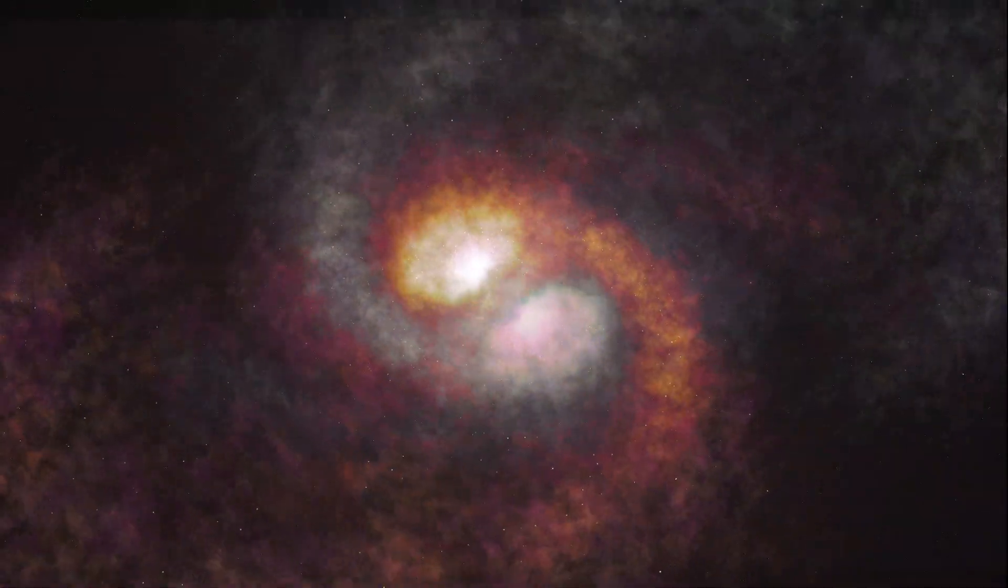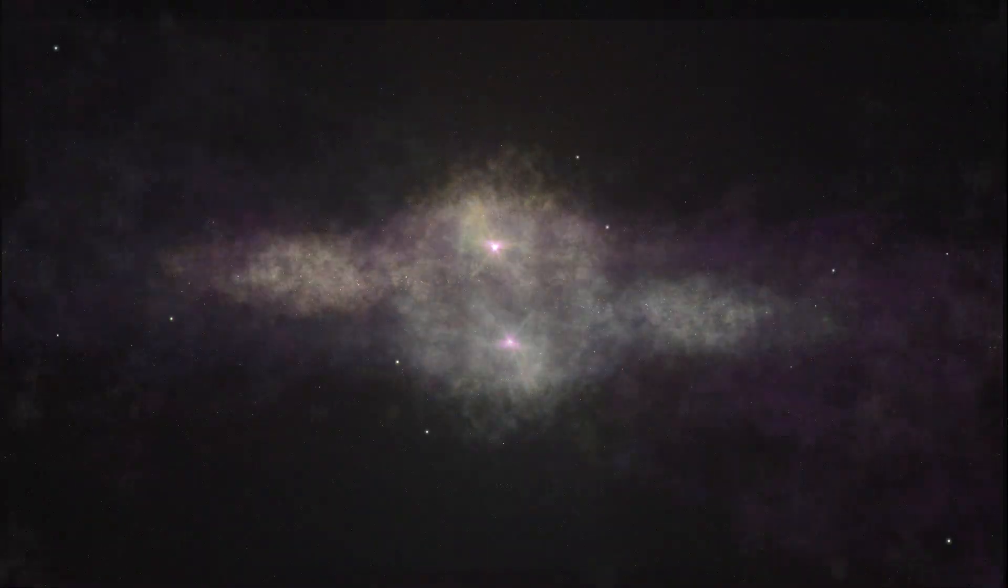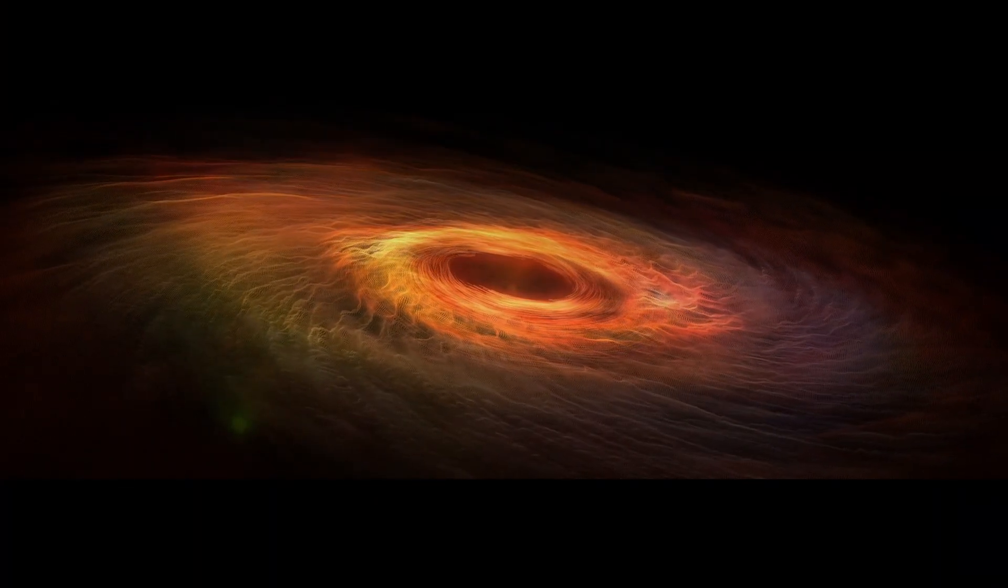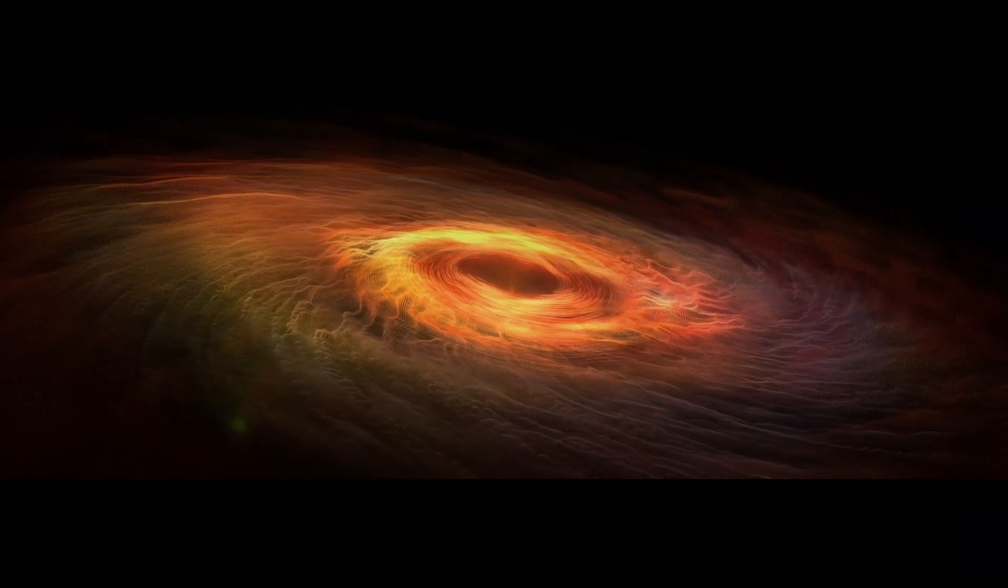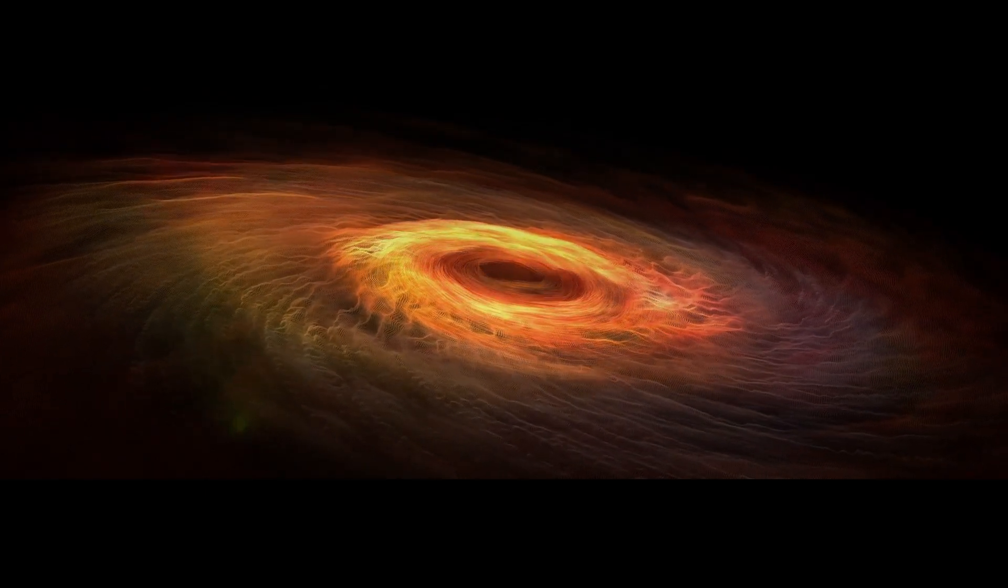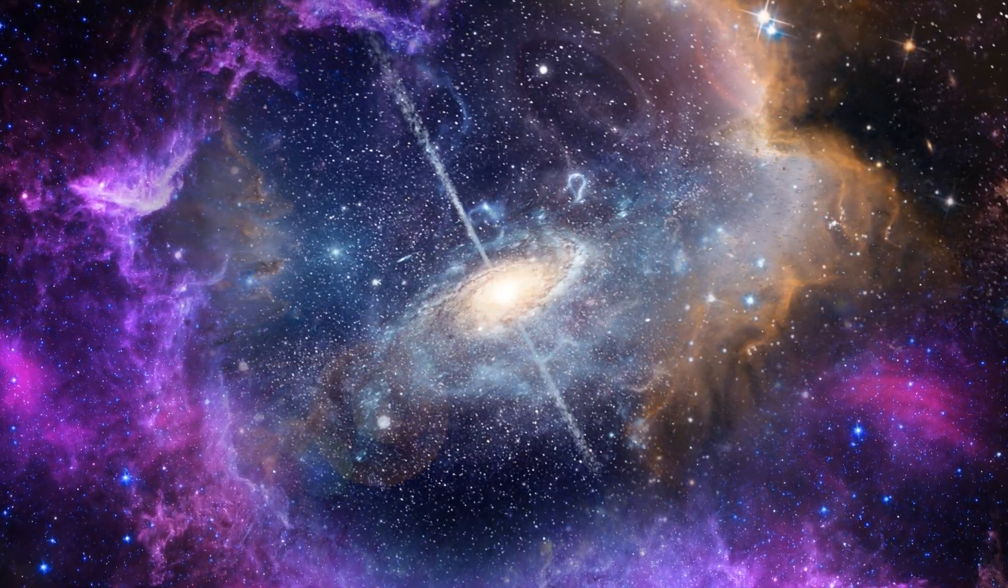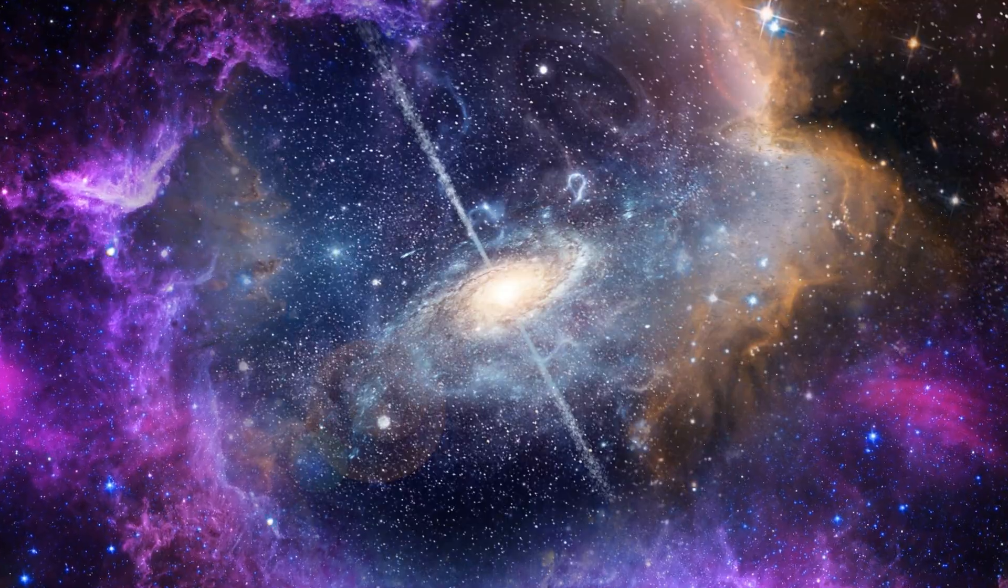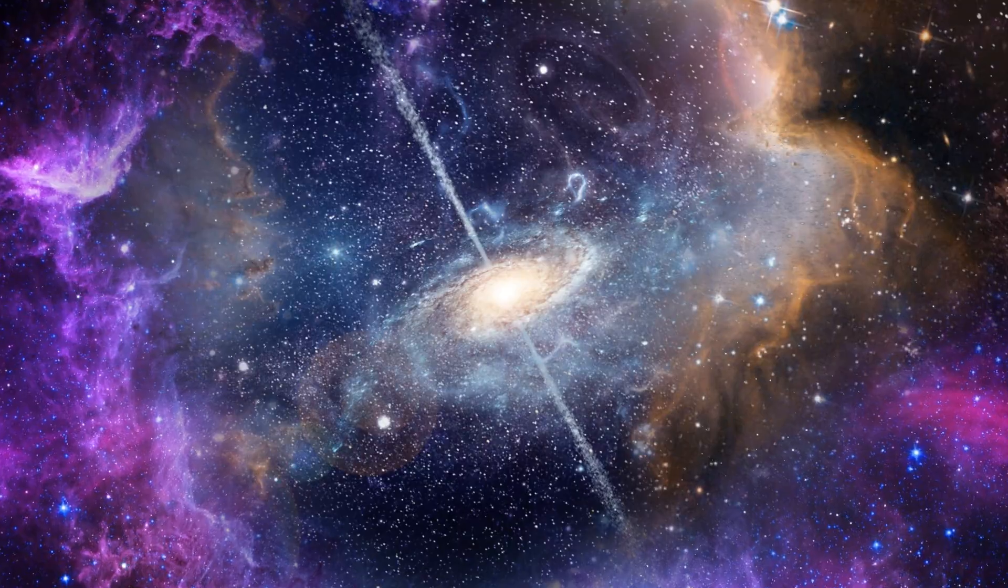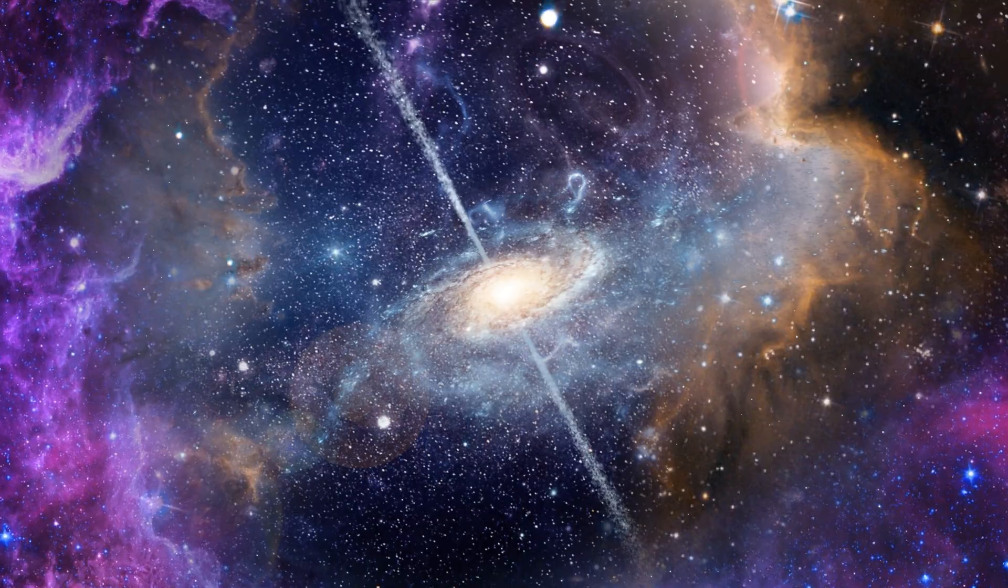Surrounding HD 14283 is a celestial panorama that stretches infinitely, a swirling canvas of cosmic dust and gas. Ethereal nebulae, painted in shades of violet and emerald, drift lazily in the distance, their colors pulsating as they cradle the remnants of long-dead stars. Each delicate filament of gas appears as if woven by the hands of time itself, glimmering under the starlight like the wisps of a forgotten dream.